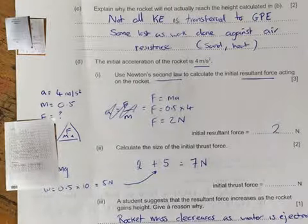A student suggests that the resultant force increases as the rocket gains height, to give a reason why. Well, the rocket mass decreases so as the water gets ejected, so it's going to reduce the weight, and if you reduce that weight then obviously your resultant force is going to increase. And that's that question there.